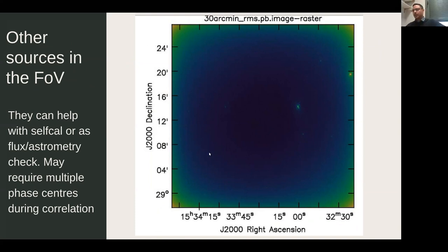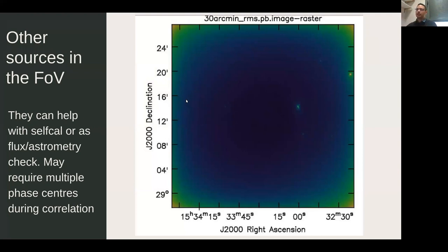There may be other sources in the field of view. For example, within the primary beam of a 25-meter antenna you may be interested in a faint source but there are bright sources nearby. If those bright sources are bright enough, you can use them to self-calibrate the field — since it's the same observation and the same data, you can transfer the solutions to your faint target without interpolating, giving much more accurate corrections for VLBI or the EVN.